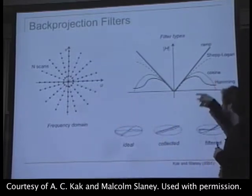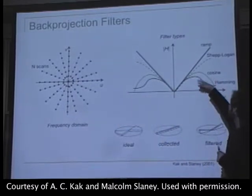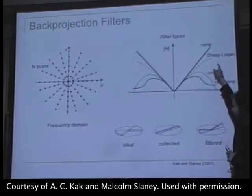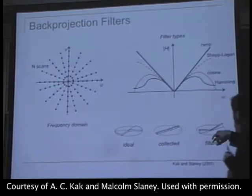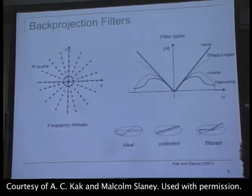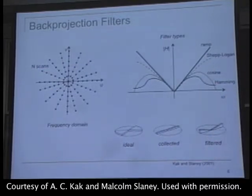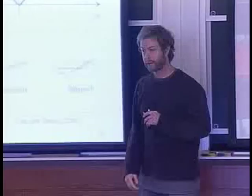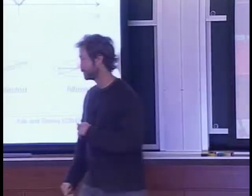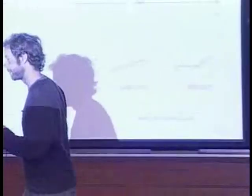The different filter types — the most common is a ramp filter, which weights in a wedge fashion. There's a Shep-Logan filter, kind of like a sinc form, a cosine filter, and a Hamming filter. Pay attention to the cosine filter, because it drops off to zero at the high frequencies — you'll see that coming up.